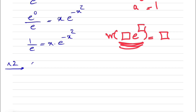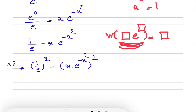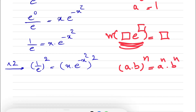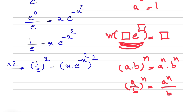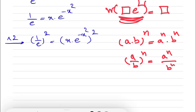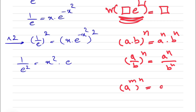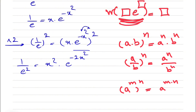So we're going to take the power of 2 on each side. We have 1 over e to the power of 2 is equal to x times e to the power of minus x squared, all to the power of 2. We know when we have a times b to the power of n, this will be equal to a to the n times b to the n. So we have 1 over e squared is equal to x squared times e to the power of — and by the laws of the exponent, when we have a to the power of m to the power of n, this equals a to the power of m times n — so e to the power of minus 2x squared.